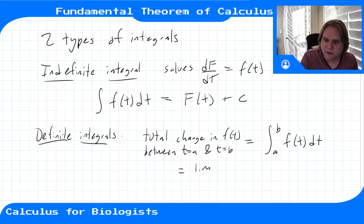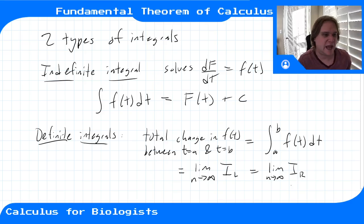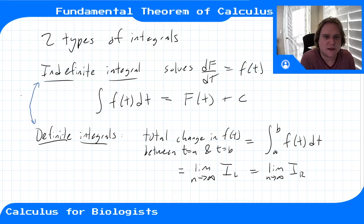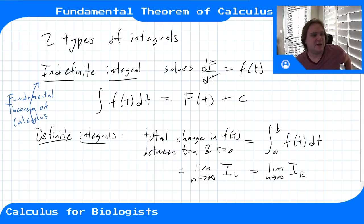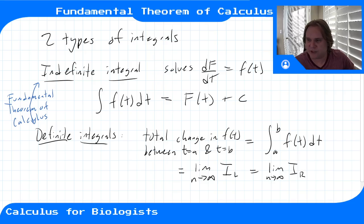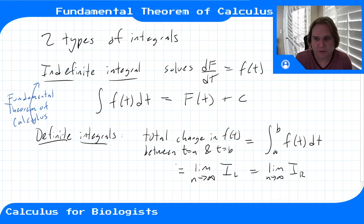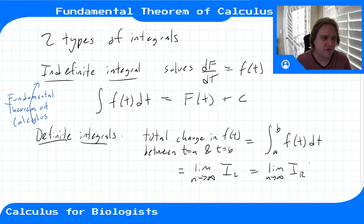The definite integral equals the limit as n goes to infinity of a Riemann sum — either a left-hand or right-hand Riemann sum. So it's the limit of those area-under-the-curve approximations. The Fundamental Theorem of Calculus links these two things. It will allow us to use indefinite integrals to solve definite integral problems. For functions with a nicely defined antiderivative, we can use that antiderivative instead of computing Riemann sums.